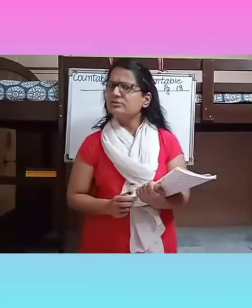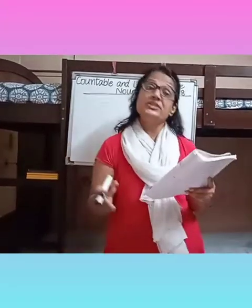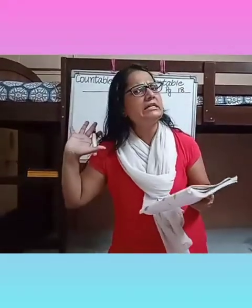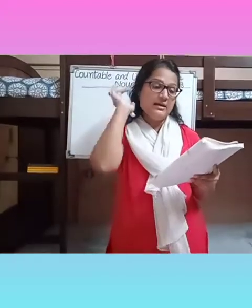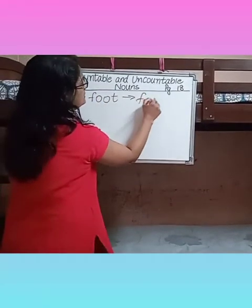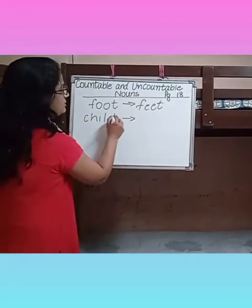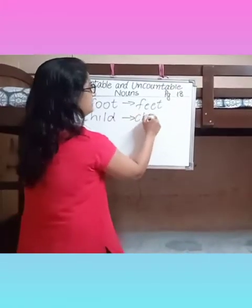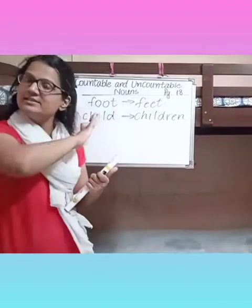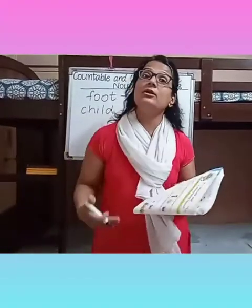Now, I also told you when we did that chapter that there are few nouns which can have irregular plural forms — their spelling changes completely. For example, 'foot' — the plural is 'feet'. 'Child' means one child, and the plural is 'children' — the spelling changes completely. So there are few nouns which have irregular plural forms.